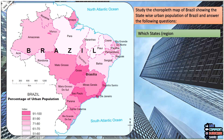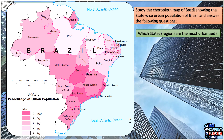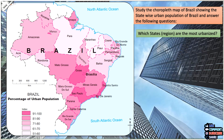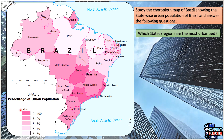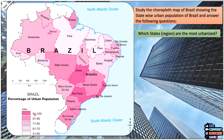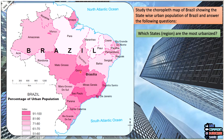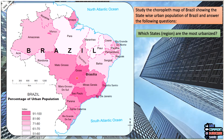The first question: which states or regions are the most urbanized? If you look at the ones colored in dark on the map, those are the states which are highly urbanized.